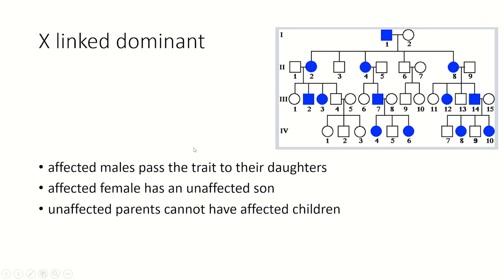If the mode of inheritance is X-linked dominant, then the affected males would pass that trait to all of their daughters. Because if the male is affected, his genotype would be X-D Y. So all of the daughters will carry X-D, and regardless of the allele on the other X copy, the disease will be expressed. So the affected dad will have affected daughters.